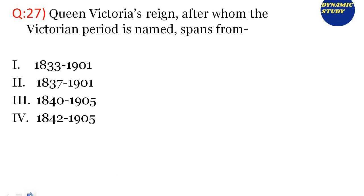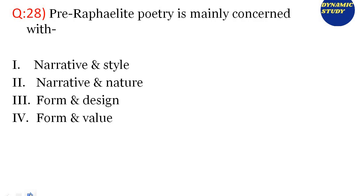Question 27: Queen Victoria's reign, after whom the Victorian period is named, spans from — Option 1: 1833 to 1901. Option 2: 1837 to 1901. Option 3: 1840 to 1905. Option 4: 1842 to 1901. The correct option is option number 2: 1837 to 1901 is the time span of Queen Victoria's reign.